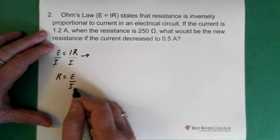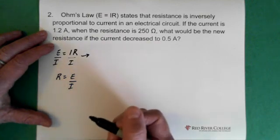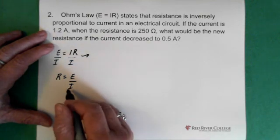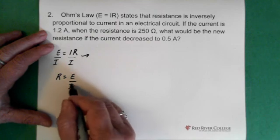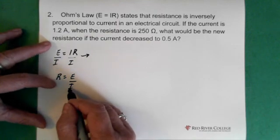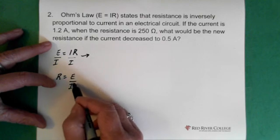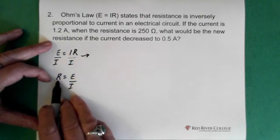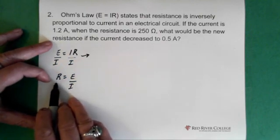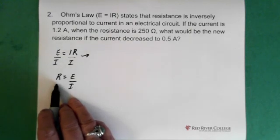If we had a larger current, that would change this equation, make this smaller. All right. And as a result, our resistance would be smaller. So there is an inverse relationship.